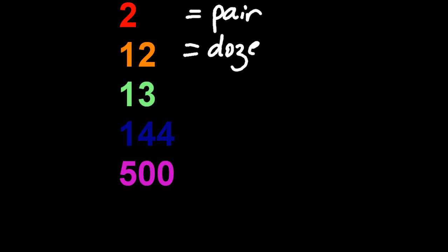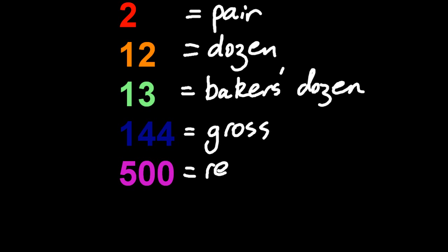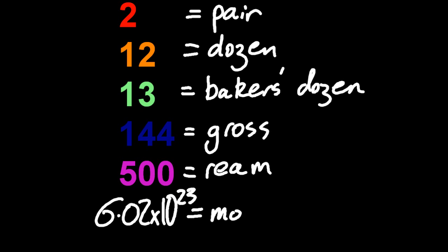Just like 2 is a pair, 12 is a dozen, 13 is a baker's dozen, 144 is a gross, 500 is a ream. And 6.02 times 10 to the 23, well, they decided to call that a mole.